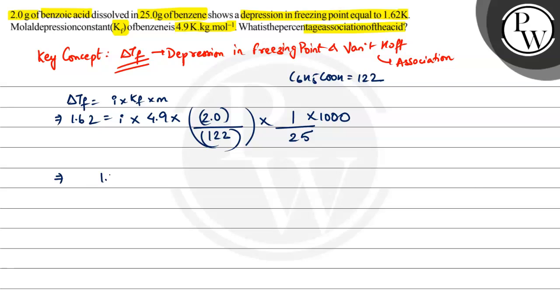Let's solve this. 1.62 divided by 4.9 into 2 into 1000 and molar mass of 122 into 25. This is going to be equal to I. So in solving this, we get 0.5042. This is I, the Vanthoff factor that we have found out.